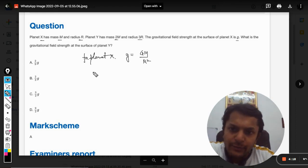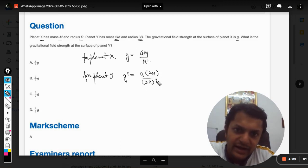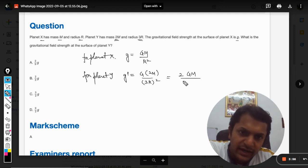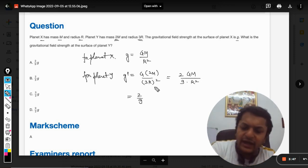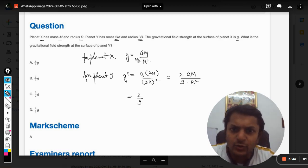For planet Y, g' will be given by G times the mass is double and the radius is thrice the radius of planet X. So it becomes 2GM/(3R)² which equals 2GM/9R², which can be written as (2/9)(GM/R²).